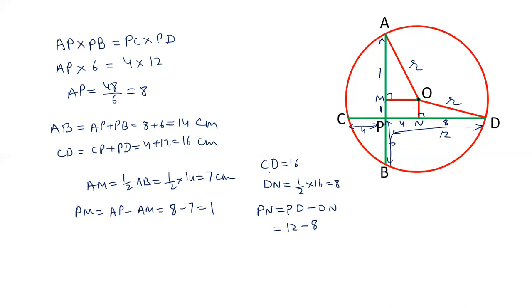Now, as PM is 1, ON is also 1. So, we have two different values in a right angle triangle. So, in a right angle triangle, we are taking OMB.